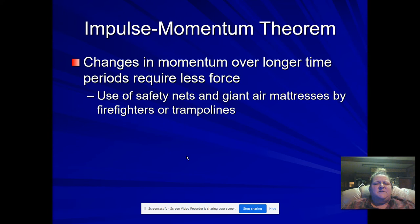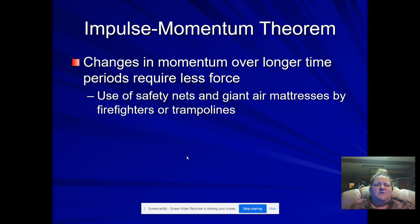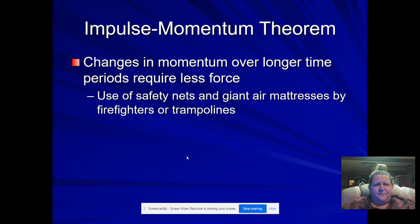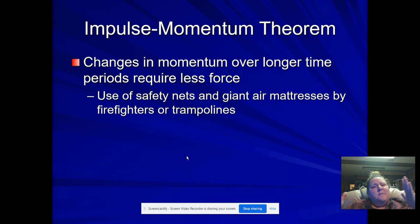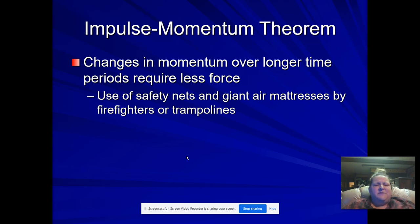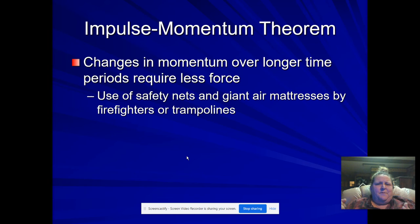Changes in momentum over longer time periods require less force. We use this for safety nets and giant air mattresses used by firefighters, or trampolines. Back to our automobile example: coming up to a red light, if you start applying your brakes a little at a time from further back, it may take greater distance but it takes less force — therefore it's easier on your brake pads. If you get real close to the intersection and then slam on your brakes, it's going to take a lot more force to stop your vehicle than if you had started stopping from further back.